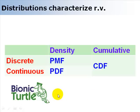Hello, this is David Harper of Bionic Turtle with a brief tutorial explaining three probability distribution terms that can be confusing at first: the probability mass function, the probability density function, and the cumulative distribution function.